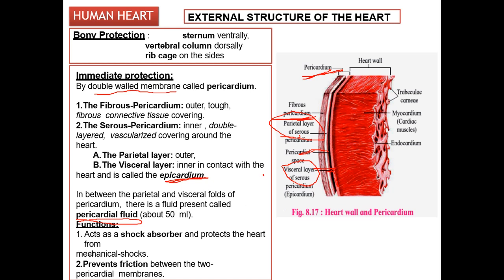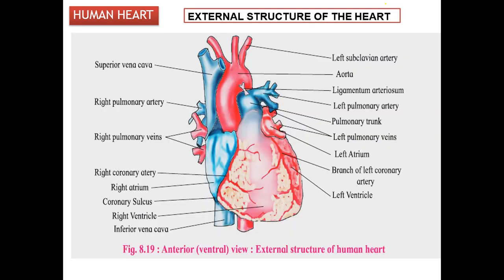Pericardium — 'peri' means around, and 'cardiac' means heart. So pericardium is the layer around the heart. This is the heart wall and pericardium. Now we move on to the external structure of the heart — the structures on the outside of the heart.